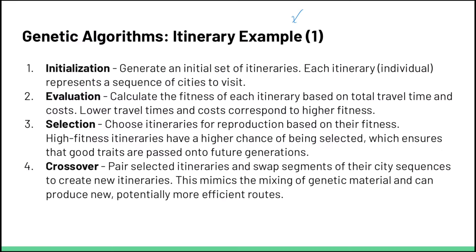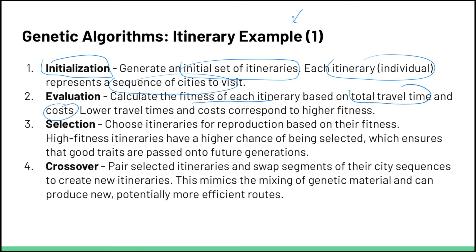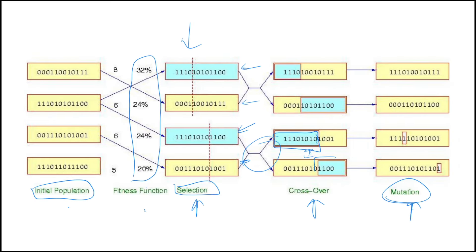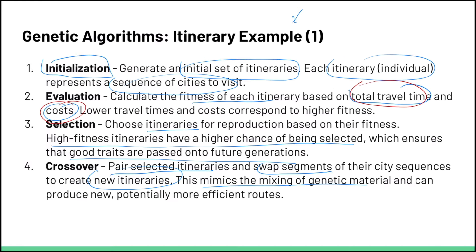Now I want to go into more depth with the itinerary example. The first part is initialization: we generate an initial set of itineraries for some trip, where each itinerary represents a sequence of cities to visit. We calculate the fitness of each itinerary based on total travel time and costs — these are the criteria by which we evaluate how good an itinerary is. We choose itineraries for reproduction based on their fitness; high fitness itineraries have a higher chance of being selected, ensuring good traits are passed on. We pair selected itineraries and swap segments of their city sequences to create new itineraries, mimicking the mixing of genetic material to get more efficient routes in terms of total travel time and cost.